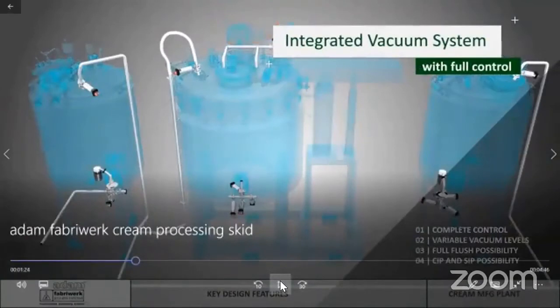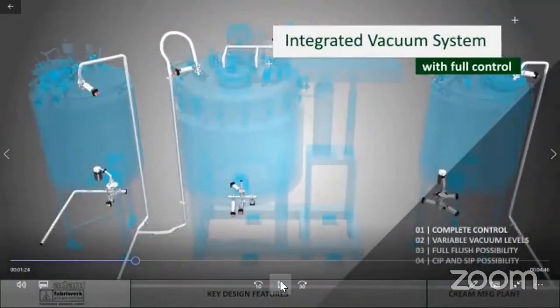All three vessels - the wax vessel, water vessel, and manufacturing vessel - are completely built with vacuum and are provided with an integrated vacuum system which gives variable vacuum levels, full flush possibility within the vessel. It ensures that all raw materials within the system are sucked by vacuum and there are no needs of specific pumps for sucking in raw material.